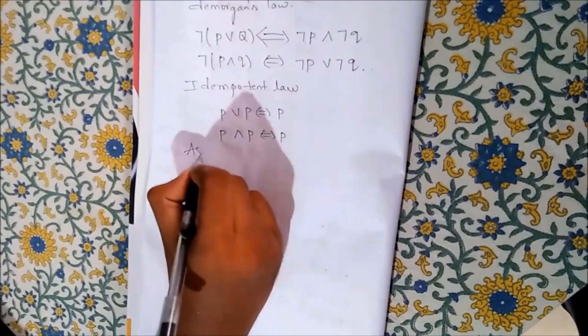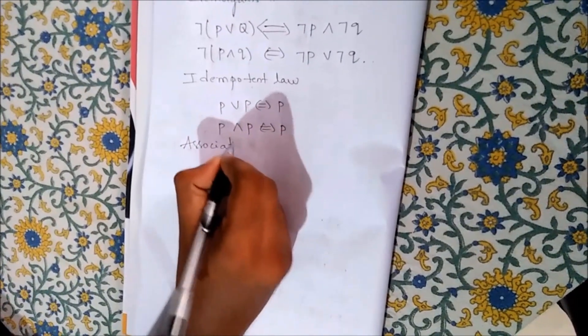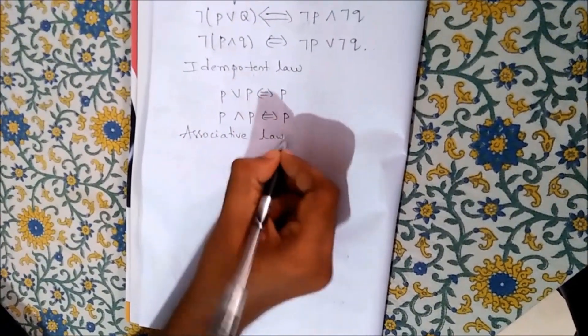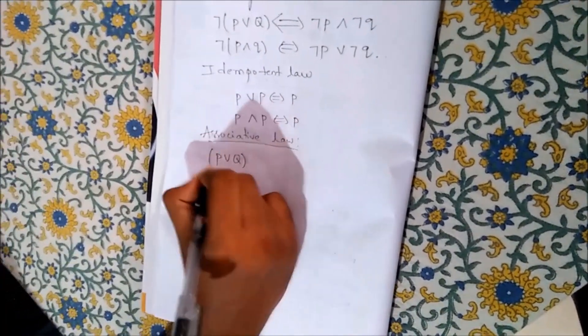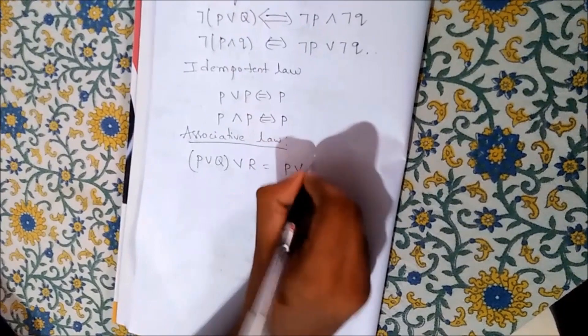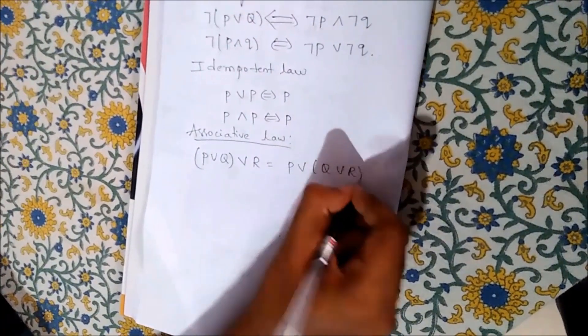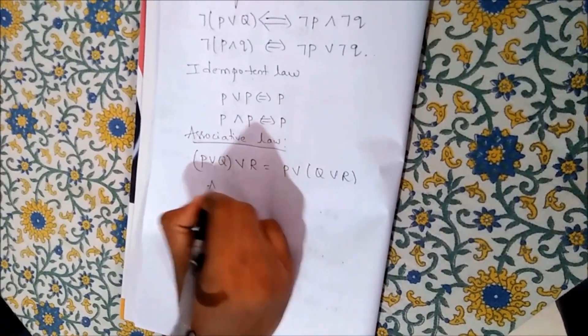Next, associative law. Similarly, for and P.